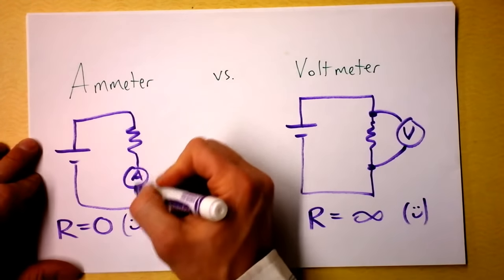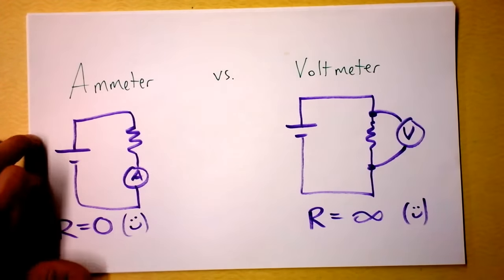But this is the way that they should be used. Ammeters should be in series with your circuit, and voltmeters ought to be in parallel. That's it.